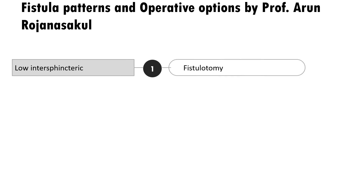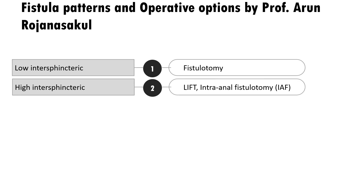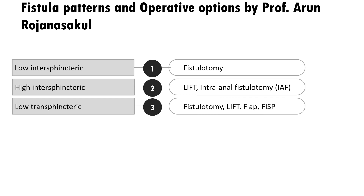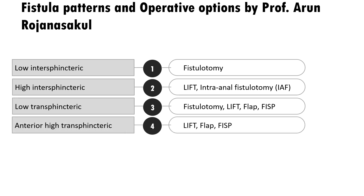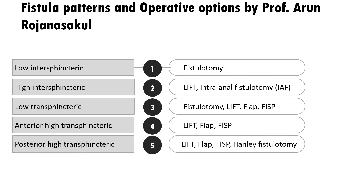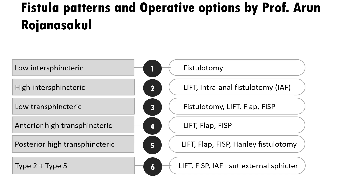In summary, we must understand the different fistula patterns and plan operative options accordingly. Fistulotomy is the best surgery for any fistula except where the sphincter is at risk of incontinence, requiring sphincter-preserving surgery. For low intersphincteric fistula: fistulotomy. For high intersphincteric: LIFT or intersphincteric fistulotomy. For low transsphincteric: fistulotomy, LIFT, flap, or fistulotomy with sphincteroplasty. For anterior high transsphincteric: LIFT, flap, or fistulotomy with sphincteroplasty. For posterior high transsphincteric: LIFT, flap, fistulotomy with sphincteroplasty, or modified Hanley's fistulotomy. For the combined pattern: LIFT, fistulotomy with sphincteroplasty, or intersphincteric fistulotomy with E-LIFT (suturing of the fistula track outside the external sphincter).